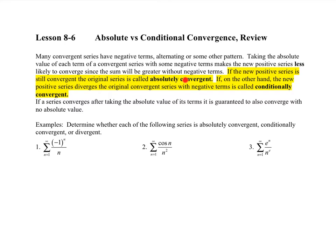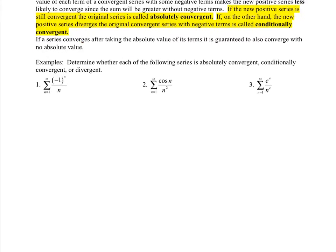It converges both ways, no problem. If, on the other hand, that positive series is divergent, the original convergent series with negative terms is called conditionally convergent. So it does converge with the negative terms, but if you make it all positive, it does not converge. So if a series converges after taking the absolute value of its terms, it is guaranteed to also converge with no absolute value. If the positive series converges, the ones with the negative terms will also converge.